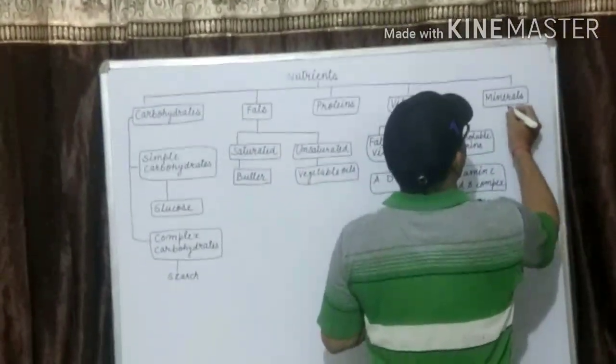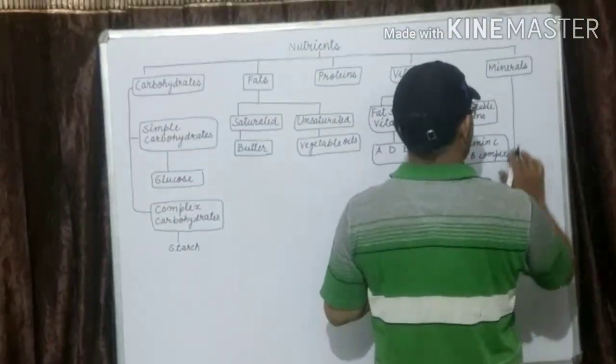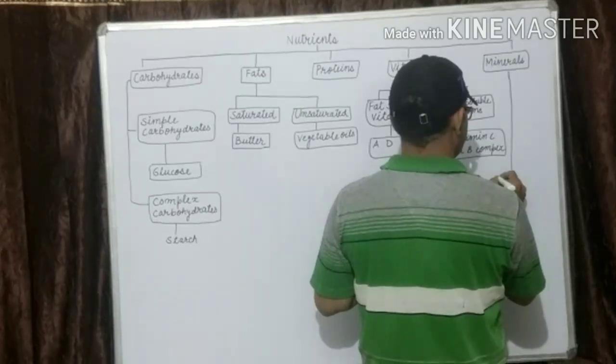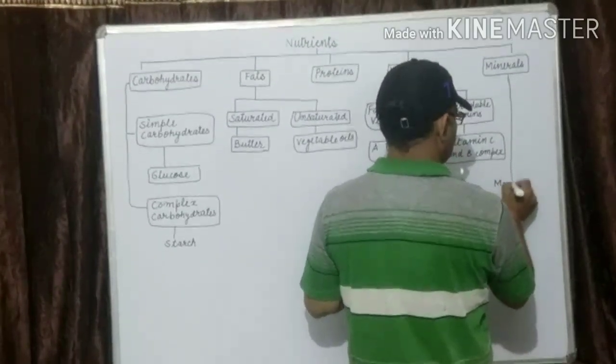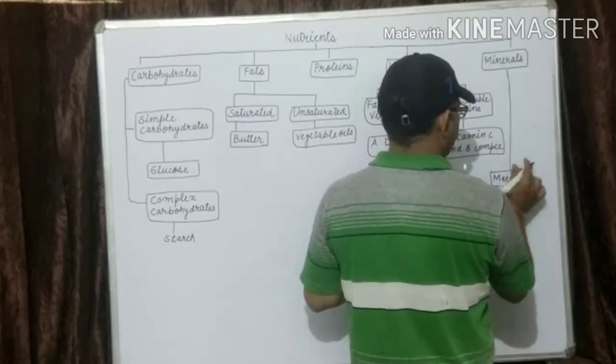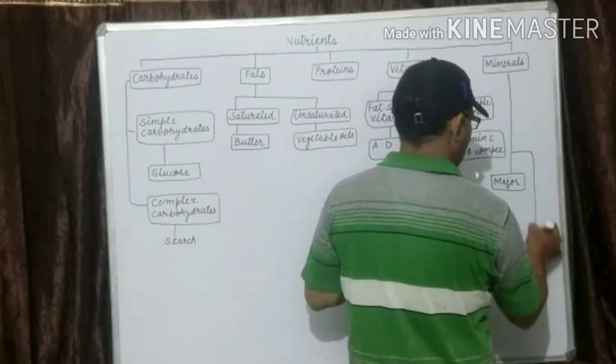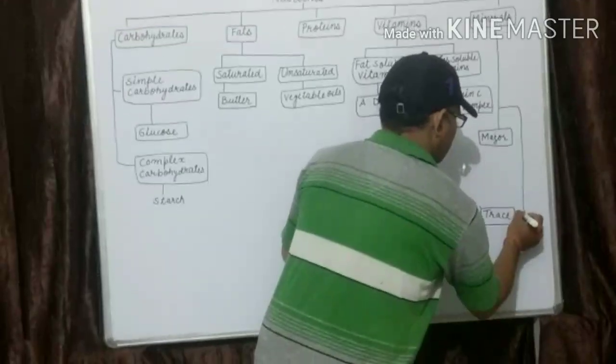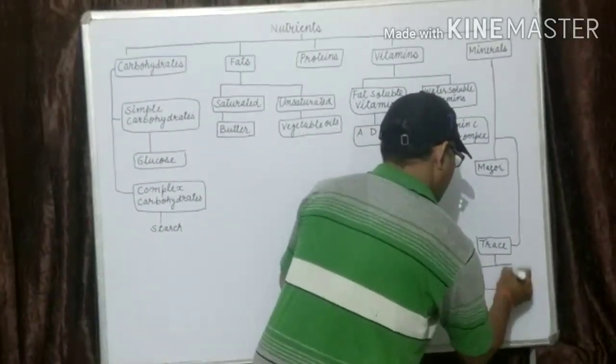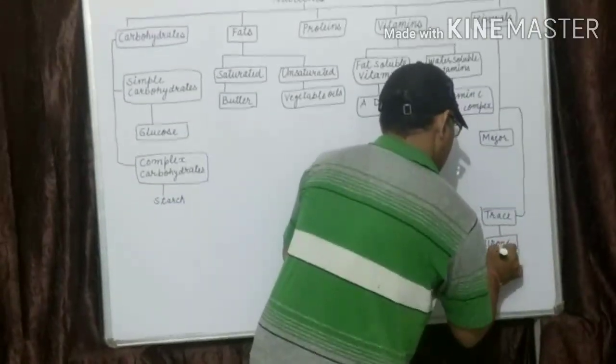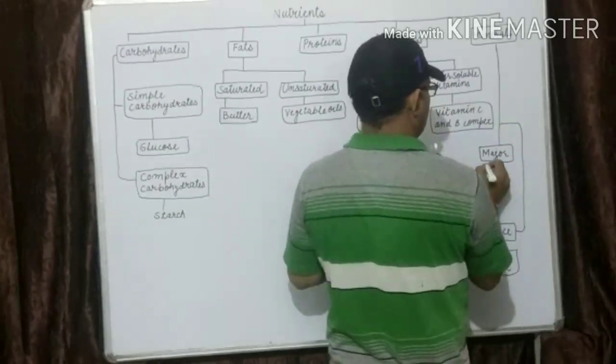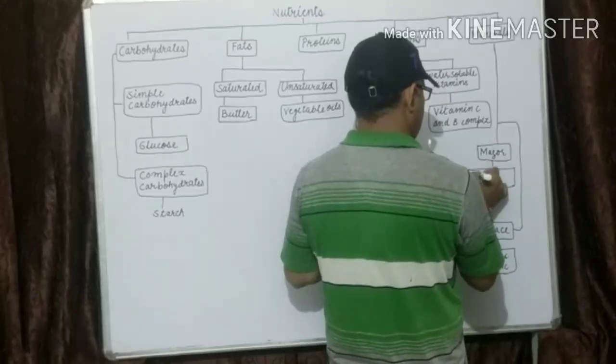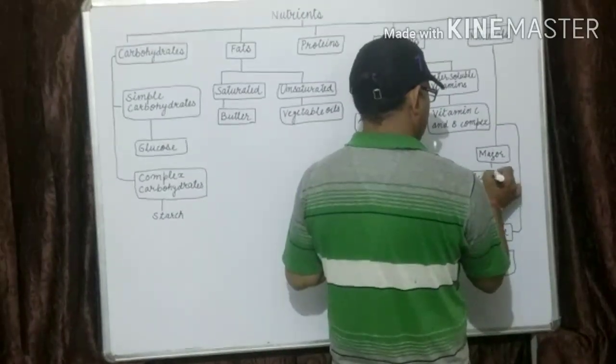Minerals are also two types. One is major and second is trace. Trace examples: iron, zinc. Major: calcium, phosphorus.